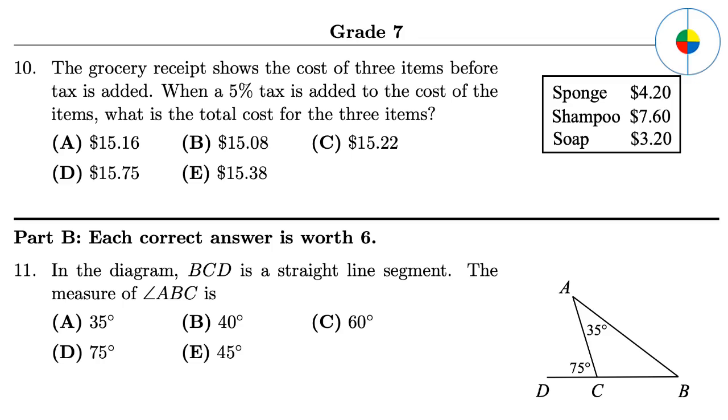Part B, medium questions. Question 11: The angle ACB is the supplementary angle of ACD, so angle ACB equals 105. The sum of the measures of the interior angles of a triangle is 180, so angle B is 180 minus 35 minus 105 equals 40.